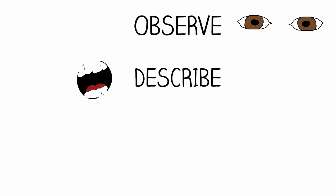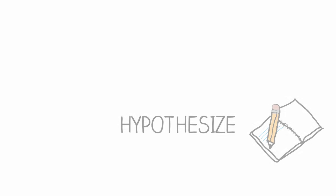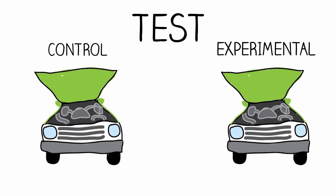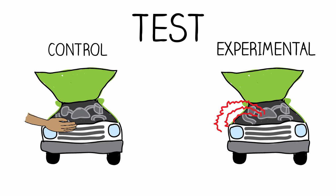First, you observed the squeaking sound, then you described it by pinpointing its location. Then you made a prediction, or you hypothesized, that the wiggling part may be related to the squeaking sound. Then you tested your hypothesis by stopping the wiggling part and observing the sound stop. You repeated the test and compared the non-wiggling and wiggling conditions, or the control and experimental conditions.